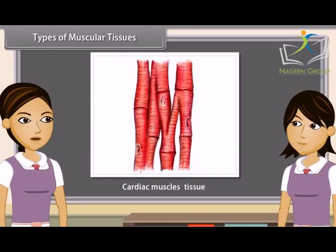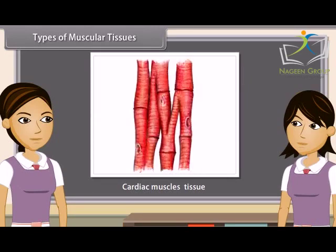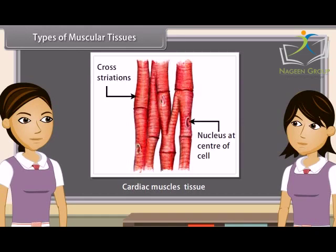Cardiac muscles are found in the myocardium of the heart. They are both striated and smooth muscles. Cardiac muscles are composed of branched fibres; the branches join to form a network. Each fibre is surrounded by sarcolemma and has sarcoplasm with longitudinal microfibrils and a central nucleus. The intercellular spaces are filled with abundant loose connective tissue supplied with blood capillaries.